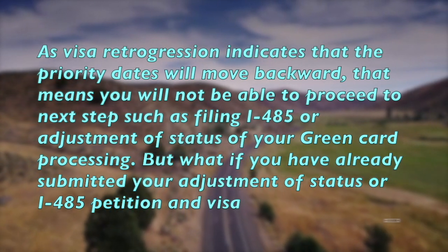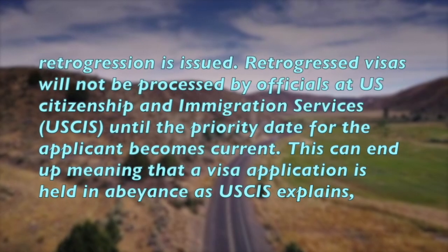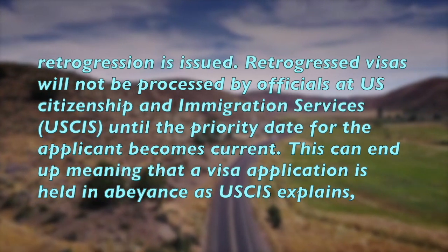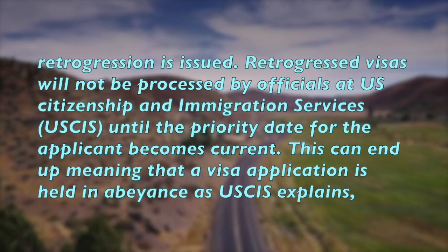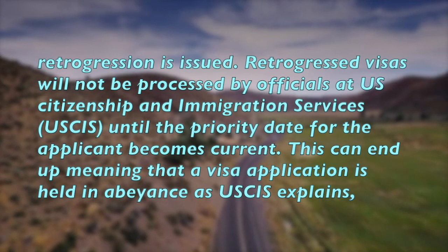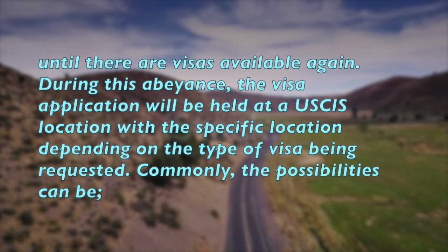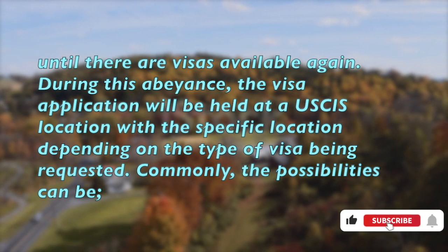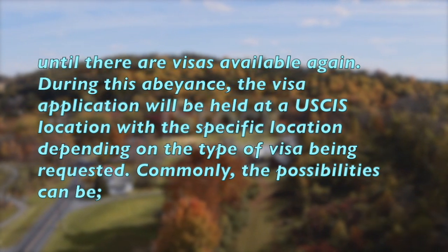But what if you have already submitted your adjustment of status or I-485 petition and visa retrogression is issued? Regressed visas will not be processed by officials at U.S. Citizenship and Immigration Services, USCIS, until the priority dates for the applicant become current. This can end up meaning that a visa applicant is held in abeyance, as USCIS explains, until there are visas available again.